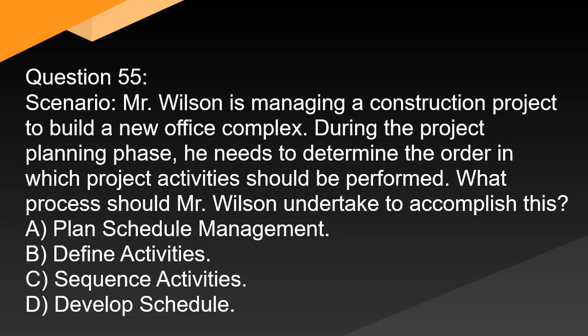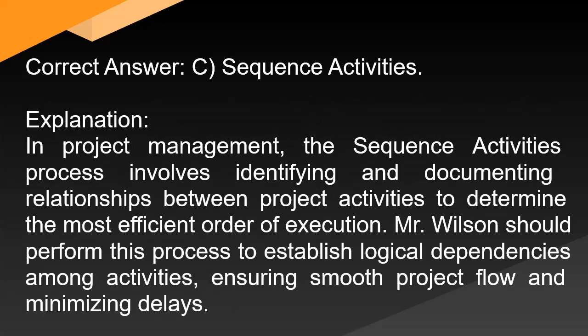Question 55: Mr. Wilson is managing a construction project to build a new office complex. During the project planning phase, he needs to determine the order in which project activities should be performed. What process should Mr. Wilson undertake? A. Plan schedule management. B. Define activities. C. Sequence activities. D. Develop schedule. Correct answer: C. Sequence activities. Explanation: The sequence activities process involves identifying and documenting relationships between project activities to determine the most efficient order of execution. Mr. Wilson should perform this process to establish logical dependencies among activities, ensuring smooth project flow and minimizing delays.